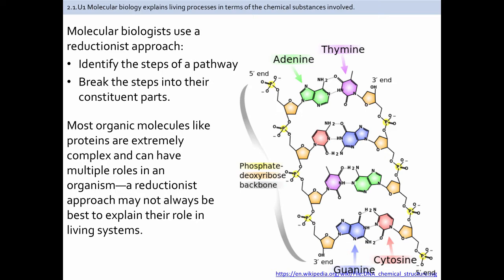The approach that molecular biologists tend to use is what's called a reductionist approach, meaning that they take the steps of a larger pathway and break them down into their constituent parts. While this is really good for understanding broader things such as cellular respiration and photosynthesis, sometimes you have to understand that a lot of organic molecules like proteins are extraordinarily complex and can have multiple roles in an organism. For example, melanin not only pigments the skin, but it also pigments the eyes and the iris. So sometimes a reductionist approach is not always the best way to explain the role of these molecules in living systems.